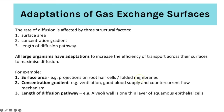Concentration gradients can be maintained through ventilation or a good blood supply removing blood which contains high concentrations of substances. In fish we'll look at the counter current flow mechanism. The length of the diffusion pathway can be reduced mainly by having only a single layer of cells, which is normally squamous epithelial cells.